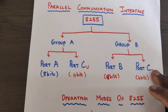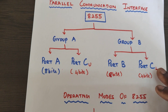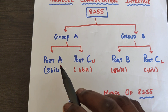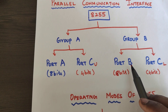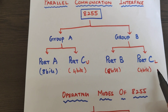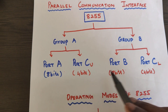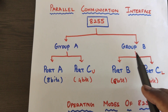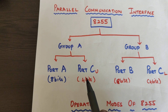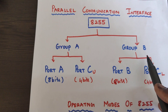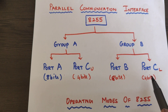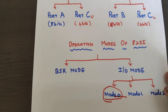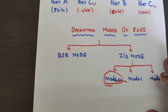The 8255 parallel communication interface has three ports, each with 8-bit data: port A, port B, and port C. Port C is divided into two parts: port C upper and port C lower. We have two groups — group A belongs to port A and port C upper, and group B belongs to port B and port C lower.